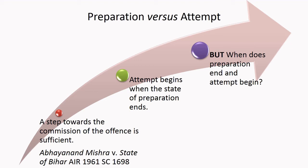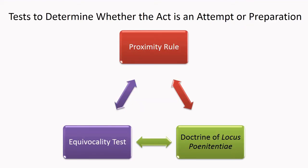A few principles have already been culled out in order to ascertain where preparation ends and attempt begins. Law provides for three tests to determine whether the act is an attempt or preparation: the Proximity Rule, the Doctrine of Locus Poenitentiae, and the Equivocality Test.